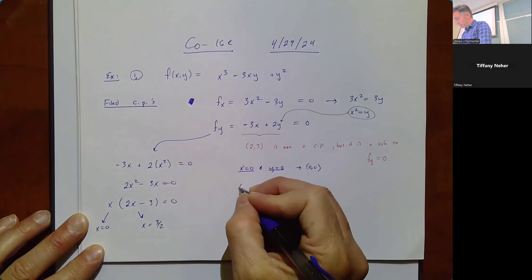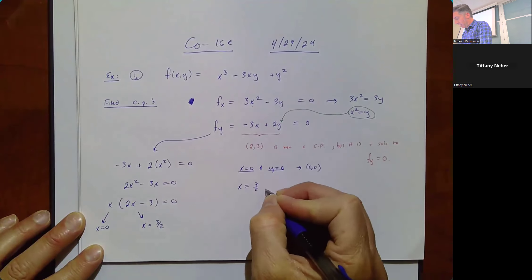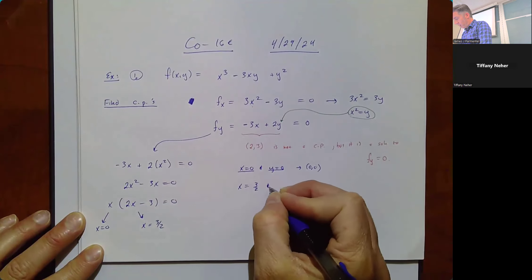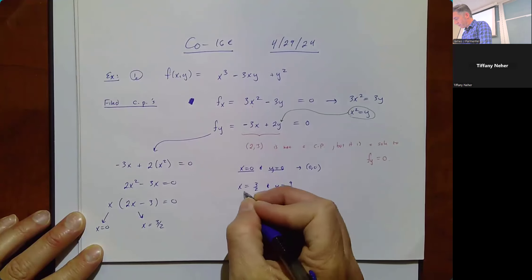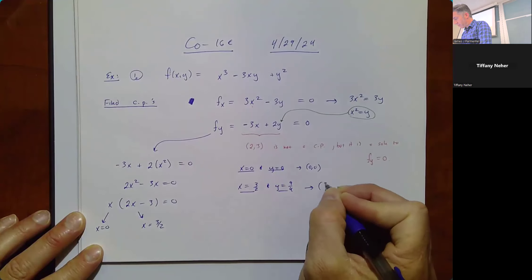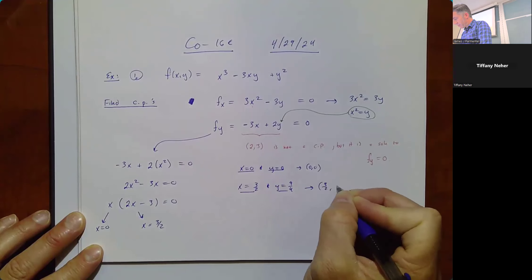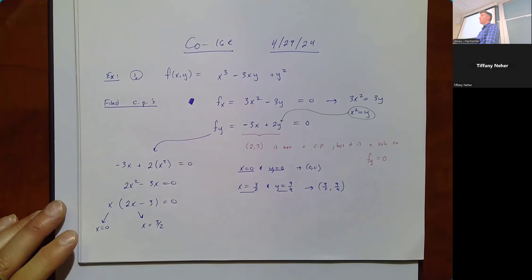If x = 3/2, then y = (3/2)² = 9/4. So our two critical points are (0, 0) and (3/2, 9/4).